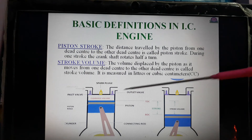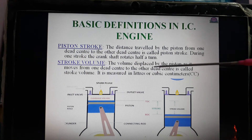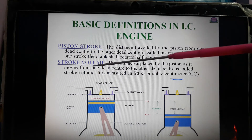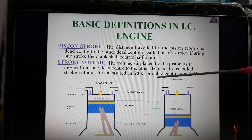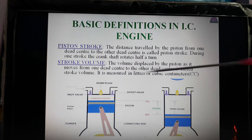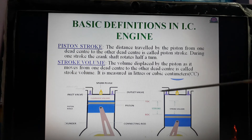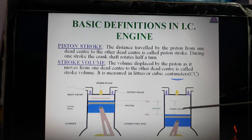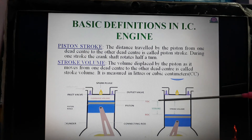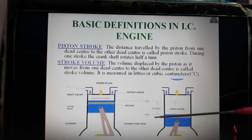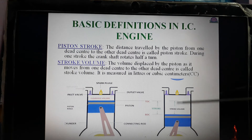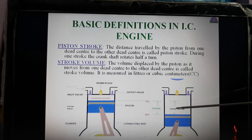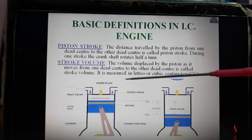The volume displaced by the piston as it moves from one dead center to another dead center is called stroke value. The distance from the top dead center to the bottom dead center represents the stroke value. It is measured in liters or cubic centimeters (cc).